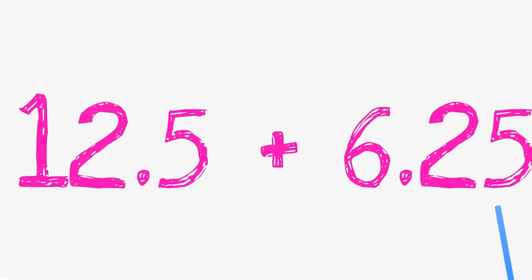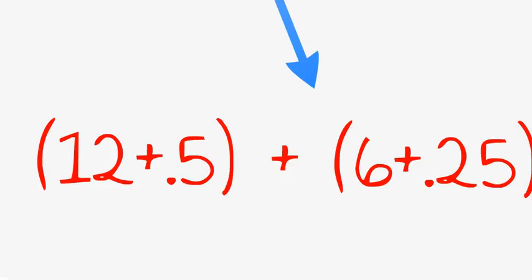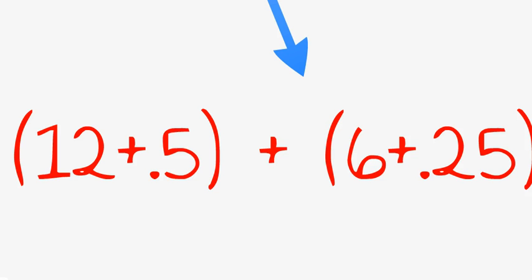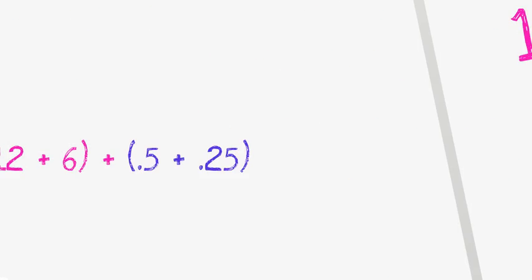Let's add 12.5 with 6.25. What we will do is we will separate the numbers and the decimals. We will write 12.5 as 12 plus 0.5 and 6.25 as 6 plus 0.25. Now we will combine the numbers and the decimals differently.